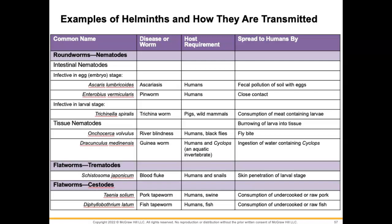Here is a reference chart table — you don't need to memorize this, just have it handy when you take the test in case you need to reference it. It covers the common name of the disease or worm, the host requirements — what it needs to live — and how it is spread to humans.